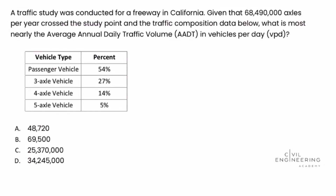If we search average annual daily traffic volume, or AADT, in the PE reference handbook — at the time of this recording we're using version 1.2 of the reference handbook — we'll find ourselves in section 5.1.3.1 where AADT is discussed. AADT is in vehicles per day, and in the problem statement we're given axles per year. Looking in the handbook, we don't see any equation that will explicitly help us convert axles per year to vehicles per day. So rather, we need to use our basic mathematical skills and logical thinking to develop an equation that will help us convert axles per year to vehicles per day based on the traffic composition data given in the chart.